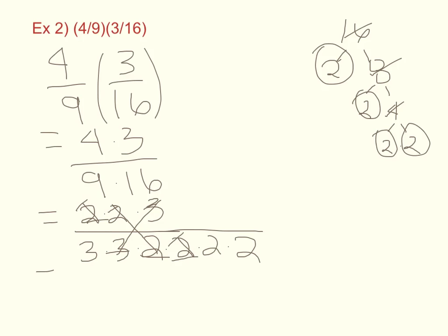So in my numerator I have 1 times 1 times 1, which is 1, and in my denominator I have 3 times 1 is 3, times 1 is 3, times 1 is 3, times 2 is 6, times 2 is 12. So my answer is 1 over 12.